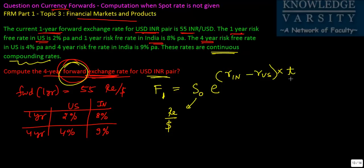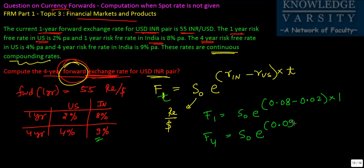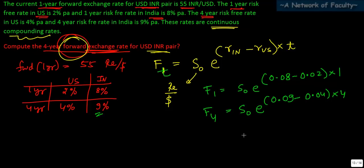then it will be e to the power of R which is the rate in India because Indian currency is rupee minus the R US rate into the time. What we will do is we will know that F1 is equal to S naught e to the power of R India which is 0.08 minus R US which is 0.02 into 1. Similarly, the four year forward rate will be given as S naught e to the power the four year rate which is 9% 0.09 minus 0.04 into 4.